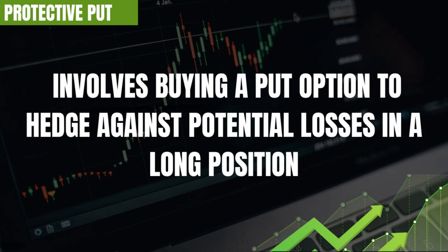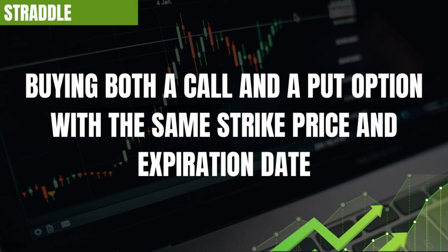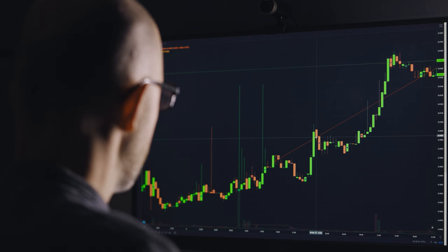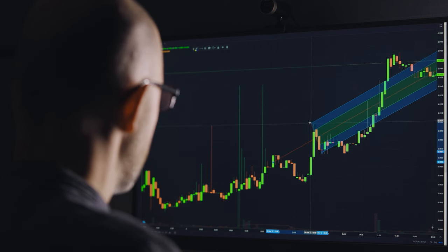A protective put is where you buy a put option to hedge against potential losses in a long position — you own the stock and buy a put option to hedge against the downside. Straddles involve buying both a call and a put option with the same strike price and expiration date. Iron condors involve selling a lower strike put and a higher strike call while buying an even lower strike put and an even higher strike call. It sounds confusing, but as you get more involved in options trading it'll make more sense. Understanding these strategies and when to apply them can improve your ability to handle different market environments.